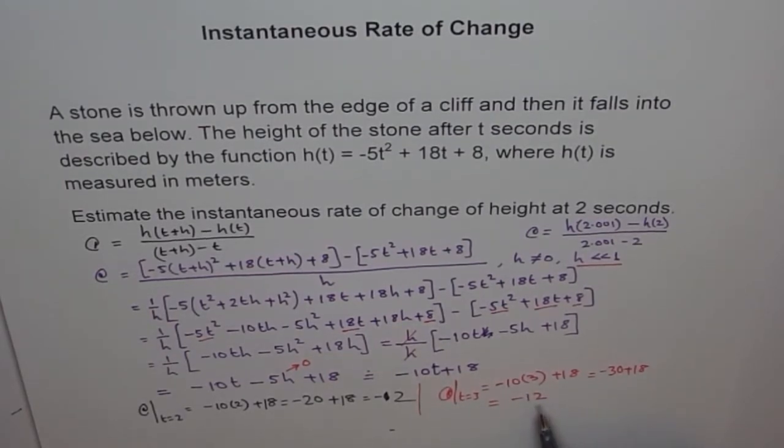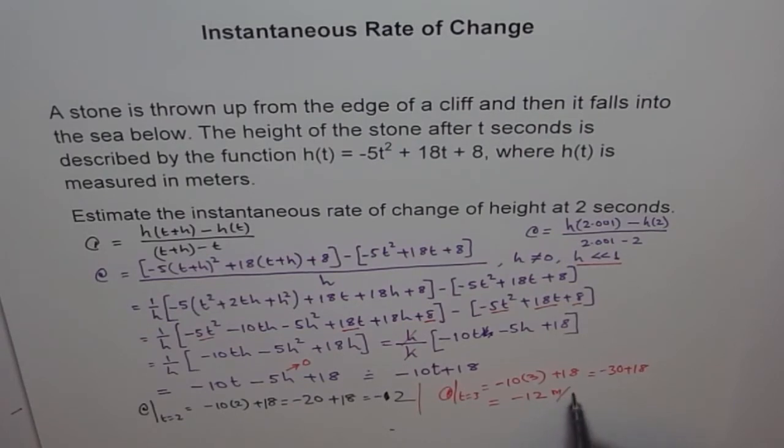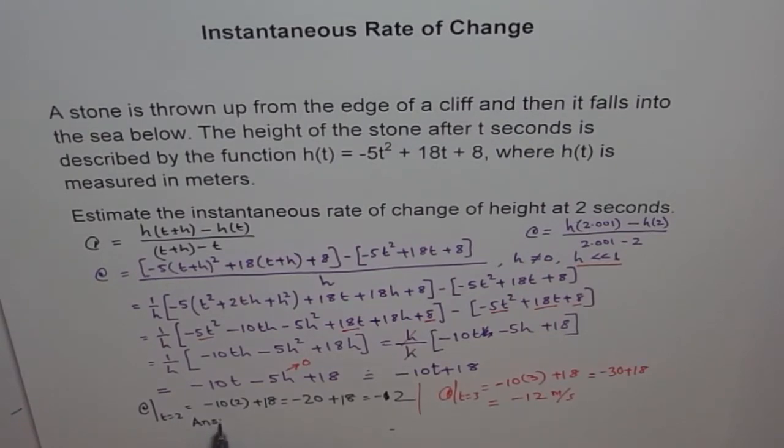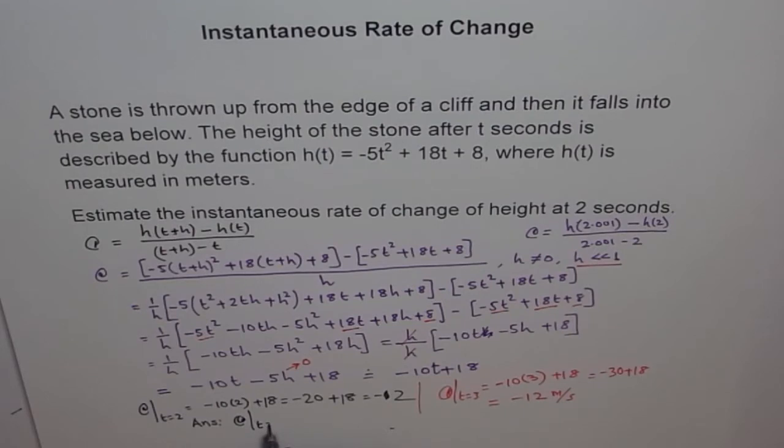And here, most important is, whenever you do this, don't forget the units. The units are, change in height is in meters and time is in seconds. So, write down answer very clearly. Answer is, the rate of change at t equals to 2 is equals to -2 meters per second.